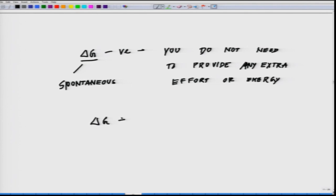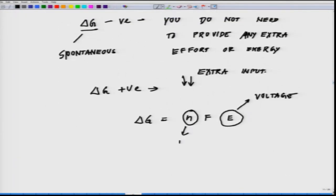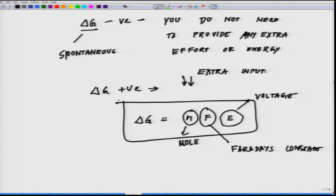In other words delta G negative means you do not need to provide any extra effort or energy because this is a spontaneous reaction. Whereas delta G positive essentially means you have to put that extra input. When we talk about delta G, when we have to calculate delta G, this is one formula which you will have to remember: NFE where E is your voltage. This delta G and N is the molarity of the molecules and F is the Faraday's constant. These are some of the relations which will come very handy. Delta G is equal to minus NFE. This is essentially what you have to remember.